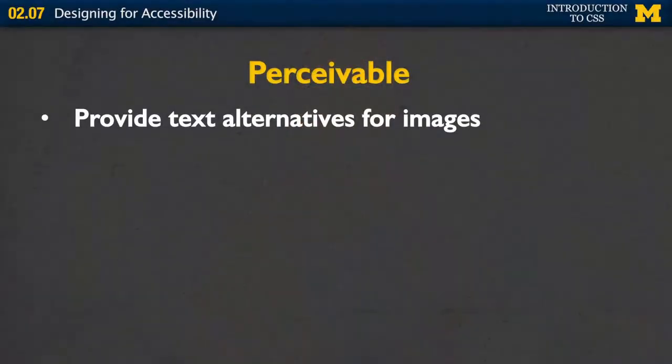The perceivable and understandable really kind of match up with what you're doing with your CSS. In order for things to be perceivable, first always remember to provide text alternatives for your images. Your images should not convey the information completely on their own.